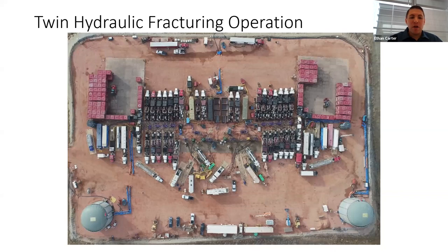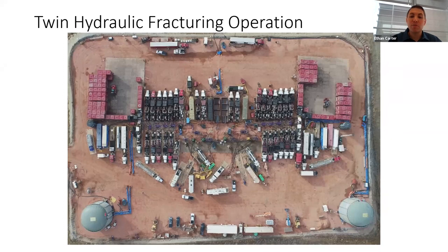This shows the same kind of operation but with two different frack crews working simultaneously — much like having two drilling rigs on the same site. Having multiple fracs running at once is becoming more and more common in the industry. It's also worth noting that the phases of development aren't necessarily linear. You may have some drilling, followed by a frac, and then a few years later it'll happen again at the same location — the drilling rig comes back, drills more wells, and the frack crews return as well.